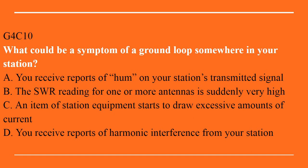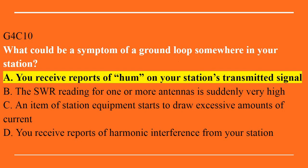G4C10: What could be a symptom of a ground loop somewhere in your station? A. You receive reports of hum on your station's transmitted signal. B. The SWR reading for one or more antennas is suddenly very high. C. An item of station equipment starts to draw excessive amounts of current. Or D. You receive reports of harmonic interference from your station. The correct answer is A. You receive reports of hum on your station's transmitted signal.